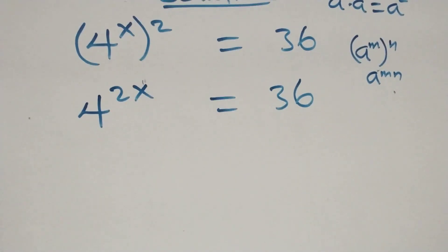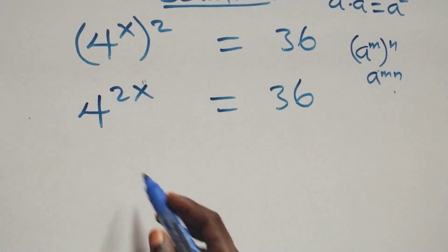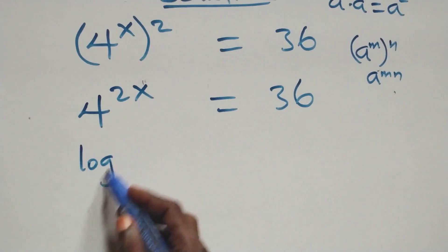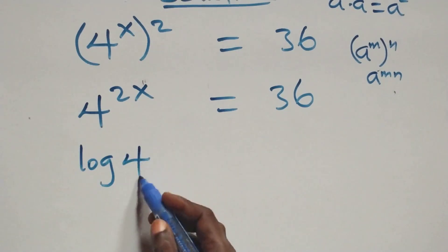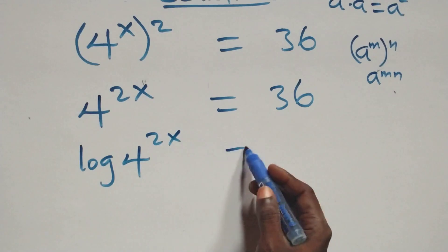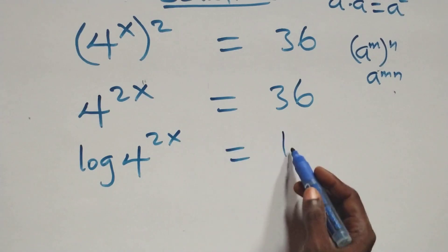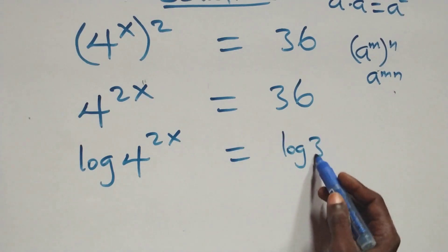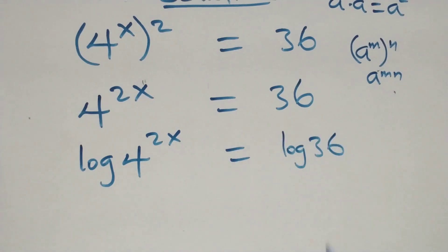The next step here, we take the log on both sides. We have log of 4 raised to power 2x equals log 36 on this side.